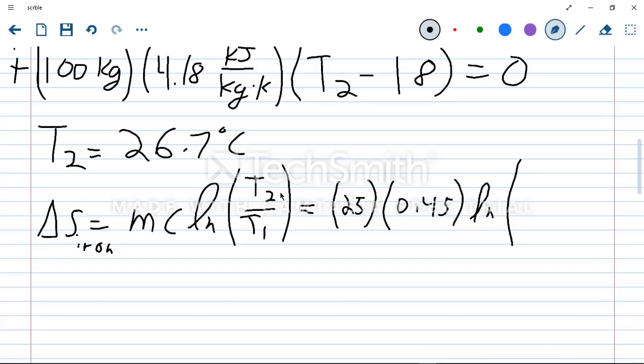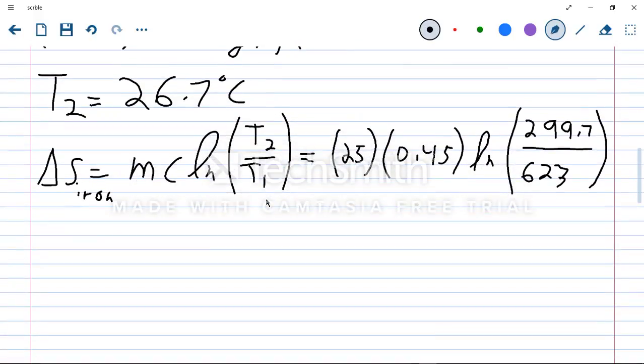Our T2 in Kelvin is 299.7 over 350 degrees Celsius in Kelvin, which is 623. So our change in entropy for the iron block equals negative 8.232 kilojoules per Kelvin. The entropy for the iron block actually went down. And that's okay, because the iron block is losing energy, where the water is absorbing energy, which makes sense.